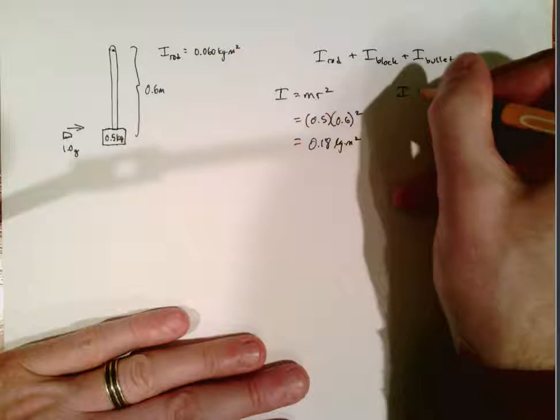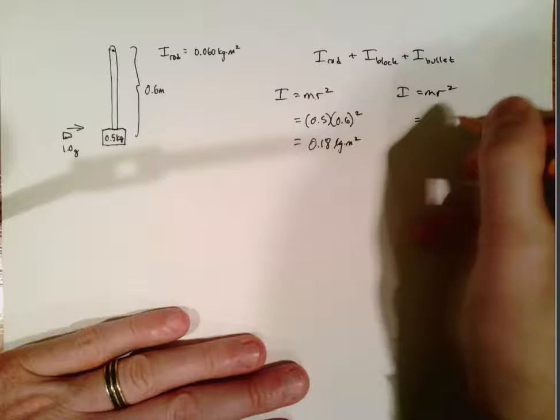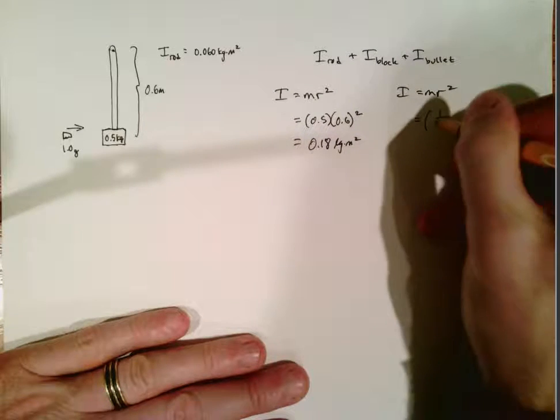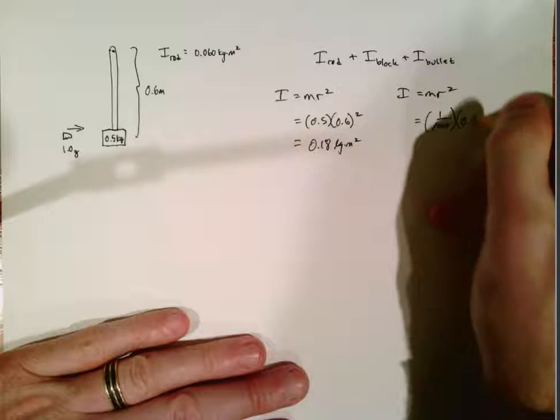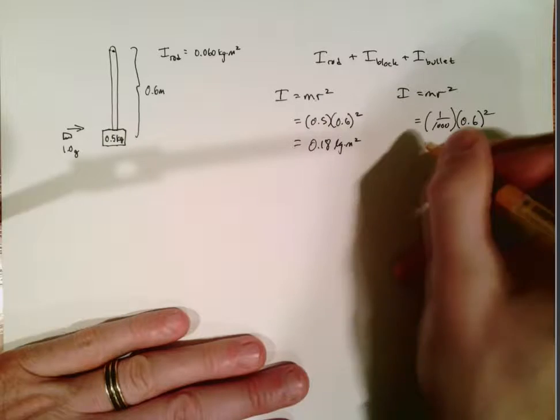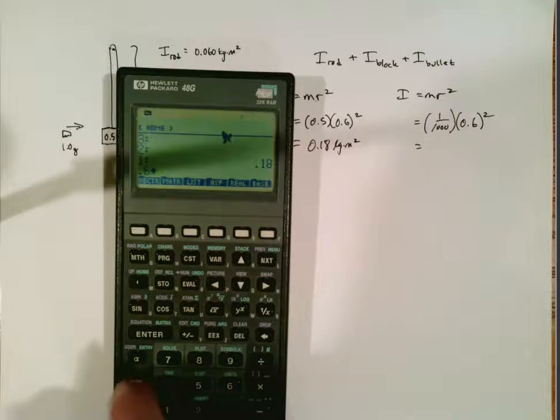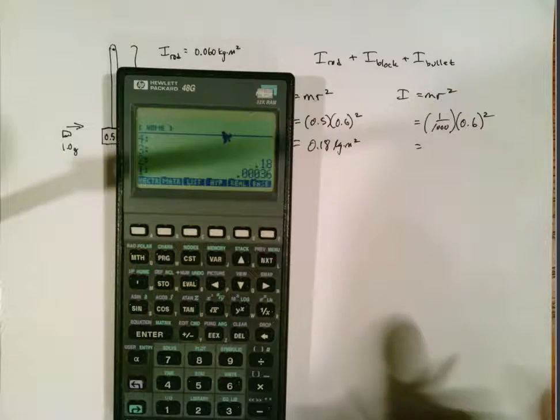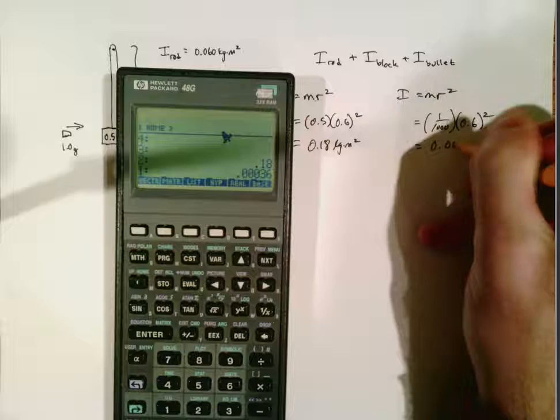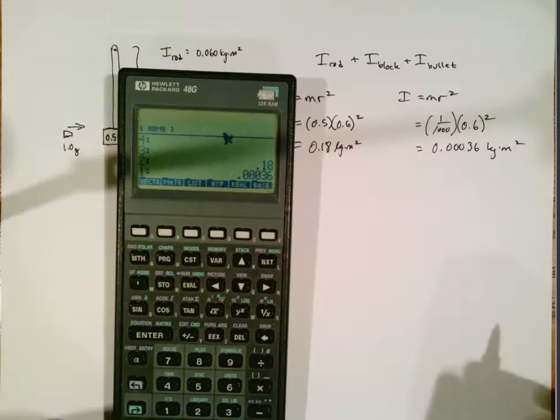Then we have the rotational inertia of the bullet. It also can be treated like a particle. Its mass is one gram, so that's one one-thousandth of a kilogram. And it is also going to end up a distance of 0.6 from the axis of rotation. So let's see what we get for its rotational inertia. It's going to be rather small. Yeah it's 0.00036. We could probably just ignore it and get essentially the same answer.